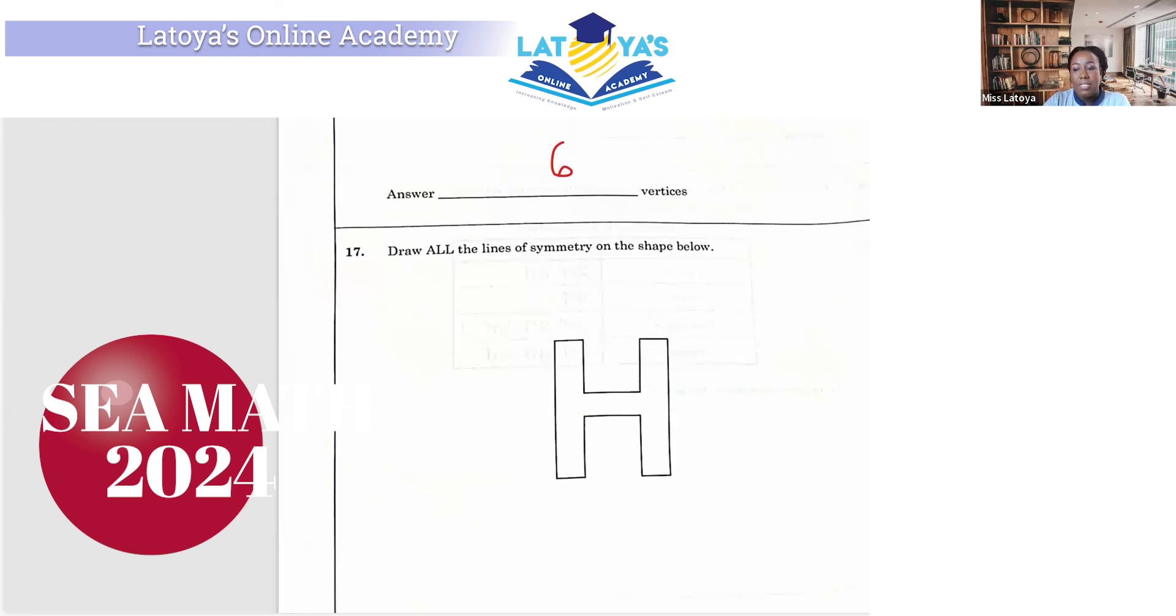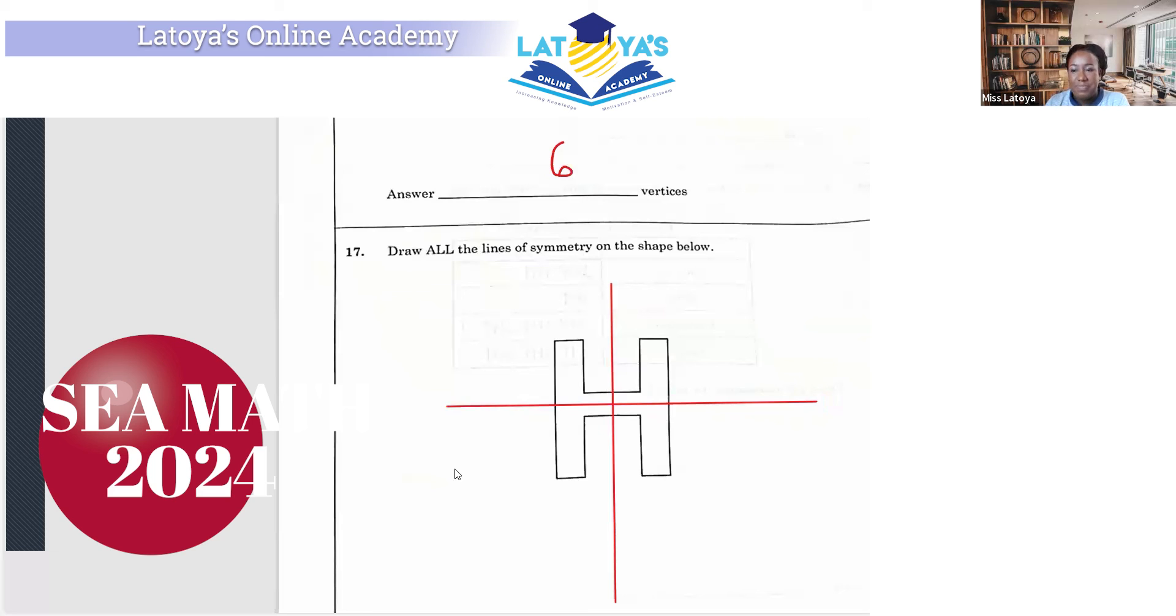Draw all lines of symmetry on the shape below. This shape has two lines of symmetry. This is one, and this is the next one. So it has two lines of symmetry, and this is how your drawing should look.